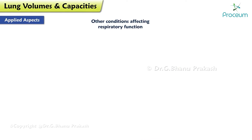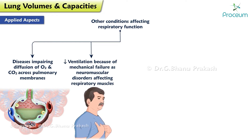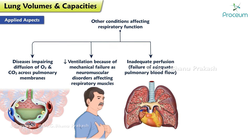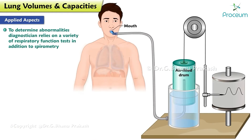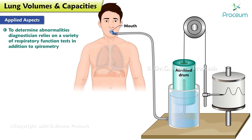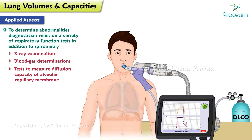Other conditions affecting respiratory function include diseases impairing diffusion of oxygen and carbon dioxide across the pulmonary membranes, reduced ventilation because of mechanical failure as with neuromuscular disorders affecting the respiratory muscles, inadequate perfusion or failure of adequate pulmonary blood flow, and ventilation-perfusion imbalances involving poor matching of air and blood so that efficient gas exchange cannot occur. Some lung diseases are a complex mixture of different types of functional disturbances. To determine what abnormalities are present, the diagnostician relies on a variety of respiratory function tests in addition to spirometry, including X-ray examination, blood gas determinations, and tests to measure the diffusion capacity of the alveolar-capillary membrane.